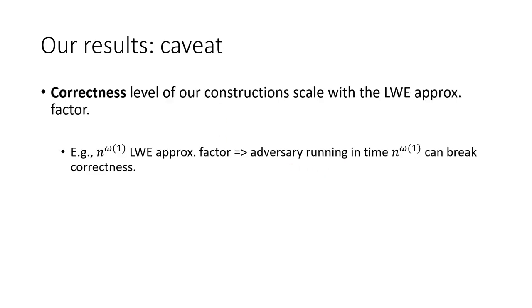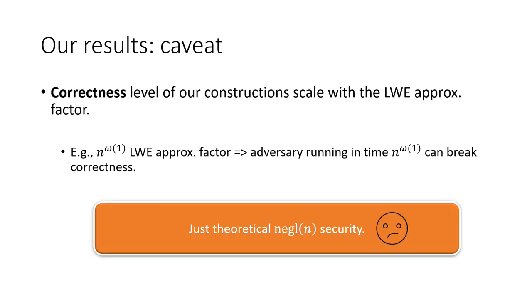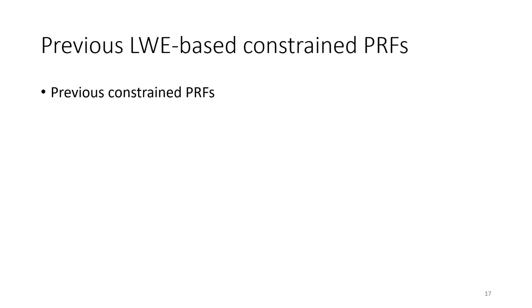One important caveat is that the concrete correctness level of our construction scales with the LWE modulus. For instance, with a nearly polynomial LWE modulus, an adversary running in nearly polynomial time can break the correctness of our scheme, meaning we can only achieve theoretical negligible security or correctness. This is an area for future work. To understand why previous LWE-based constructions needed a sub-exponential modulus: in those constructions, the PRF output is a value in Z_p where p divides q. To compute the PRF at input x, one evaluates an intermediate function f' to get a value mod q, then rounds to get a value mod p.